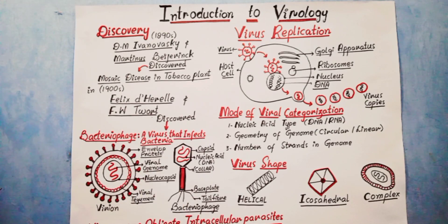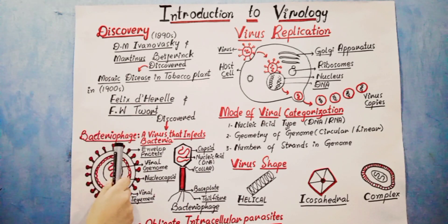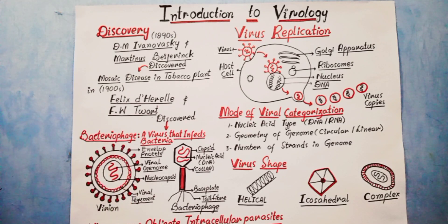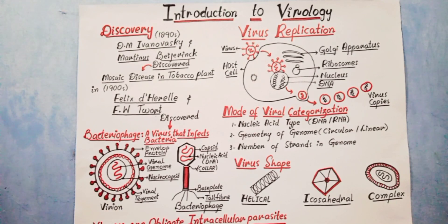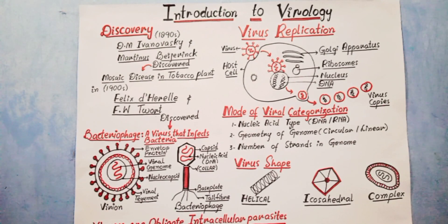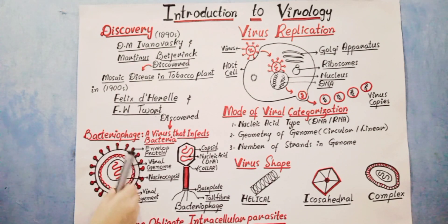They called that virus a phage — bacteriophage. So the bacteriophage is the virus which only infects bacterial cells. After the discovery of bacteriophage, the field of modern virology was born. A virus is just a bundle of genetic information which is either DNA or RNA, but never both.